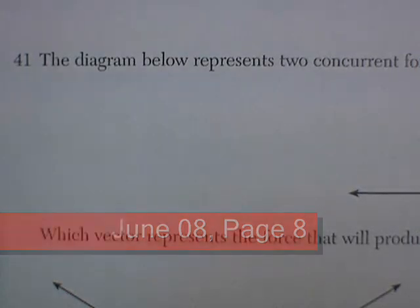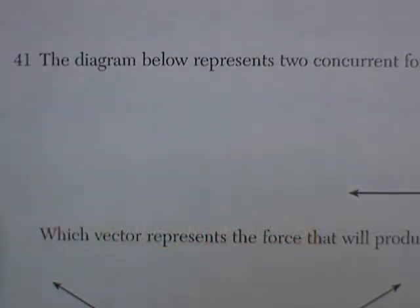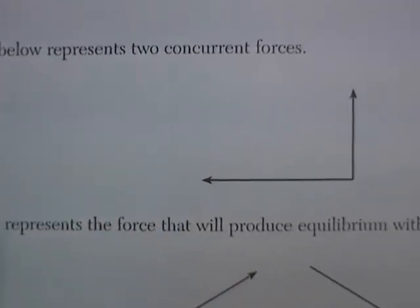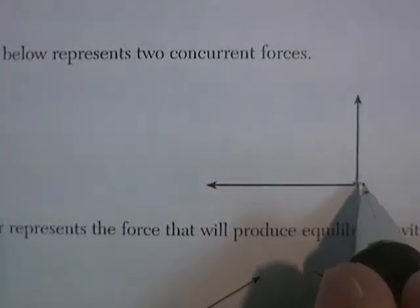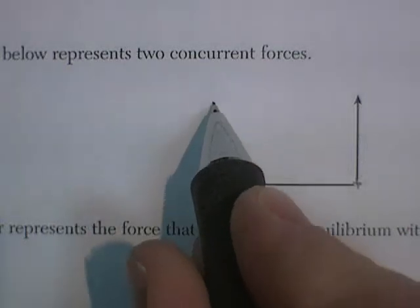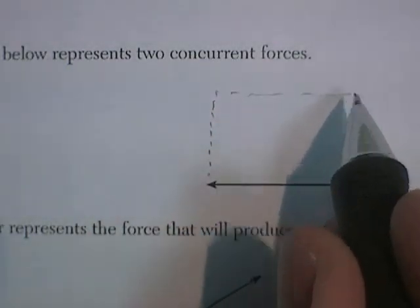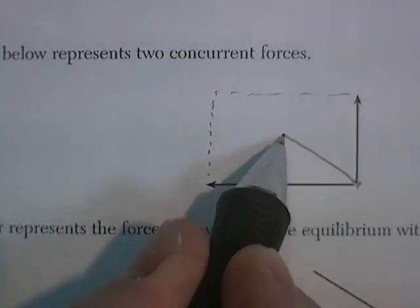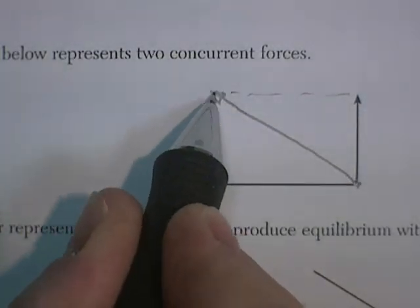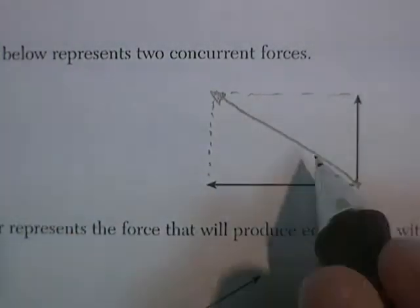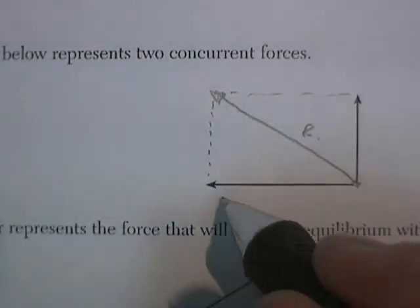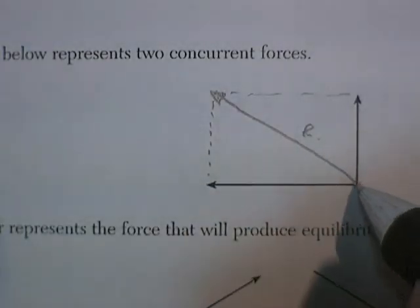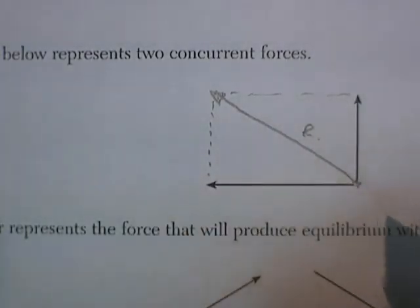We're in the June on 8 exam, page 8, Question 41. The diagram below represents two concurrent forces — two forces acting on the same object. The resultant of those two forces would be something like this, so that would be the resultant. If you didn't have these two forces, you could replace them with this single force, pulling it upwards and pulling it to the left.